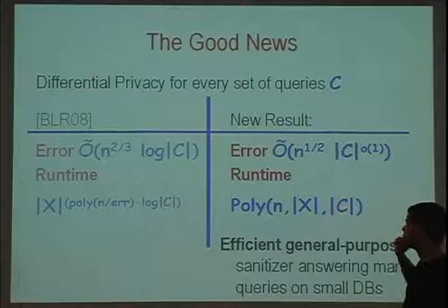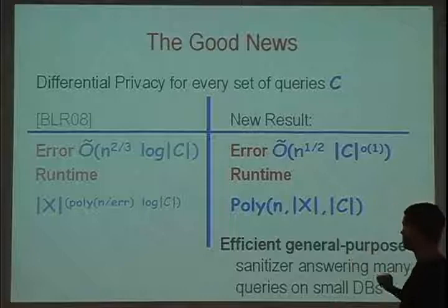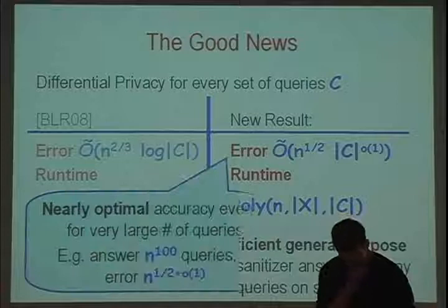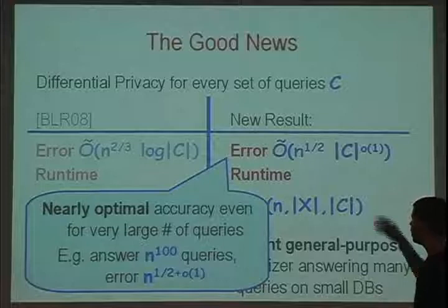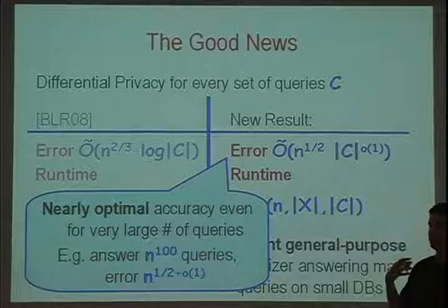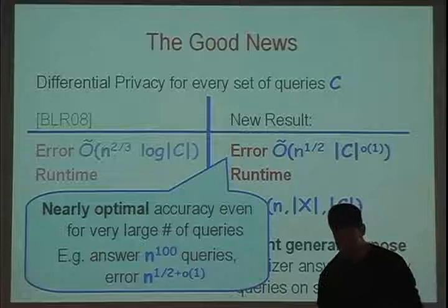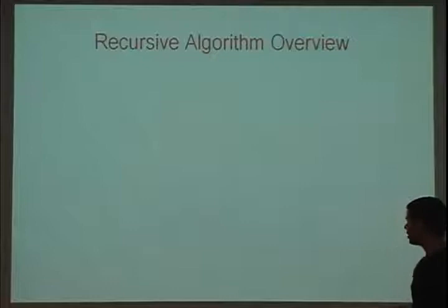Unfortunately, if the data universe and query set are implicitly specified, we could hope for sub-polynomial running time, but we'll see that if you want a synthetic database output, your running time cannot be sub-polynomial in either the data universe size or the query set size. So let's talk about the algorithm — the good news. Blum-Liggett-Roth showed you can sanitize any set of queries with error like n^(2/3). The new result shows how to sanitize any set of queries where the error is something like square root of n times a factor smaller than any polynomial in the query set size.